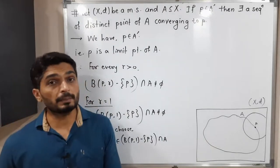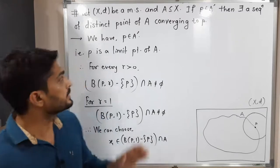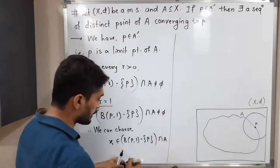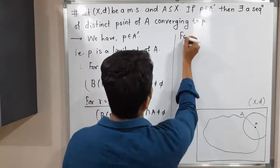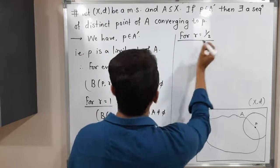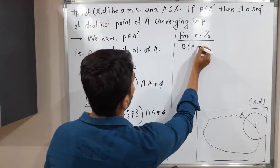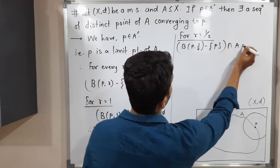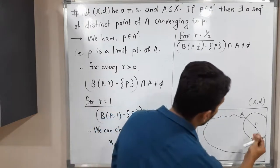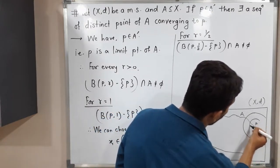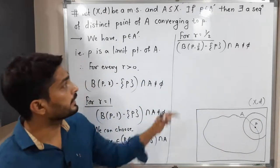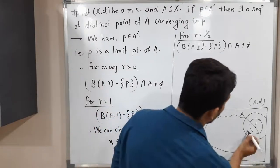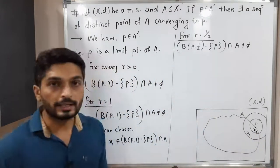For r equal to 1 we got x₁. We can repeat the same thing for r equal to 1/2, since this is true for every r greater than 0. For r equal to 1/2: B(p, 1/2) minus {p} intersected with A is not empty. We are considering a ball with center p again, but radius is 1/2. The intersection of that smaller ball minus {p} with A is non-empty, so we can find some point x₂ from that intersection.